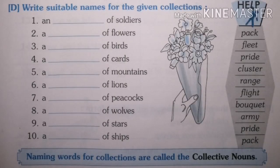Write suitable names for the given collection. Children, on the screen you can see some sentences with blanks. On the right side of the screen you can see a help box. Write suitable collective nouns from the box. Let's start with the first sentence. 'An blank of soldiers.' What do we call for a group of soldiers? Army — an army of soldiers. What do we call for a collection of flowers? You can see that picture on the screen. A bouquet of flowers. A blank of birds — if there is a group of birds, what will we call them? A flight of birds.